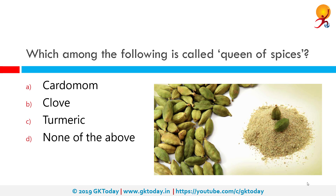Which among the following is called Queen of Spices? The correct answer is Cardamom. Cardamom is known as Queen of Spices whereas Black Pepper is known as King of Spices. Both Cardamom and Black Pepper are perennial crops of the tropics and are the most important and most widely sought after spice crops of the world.